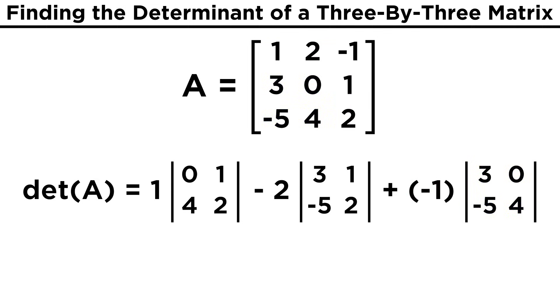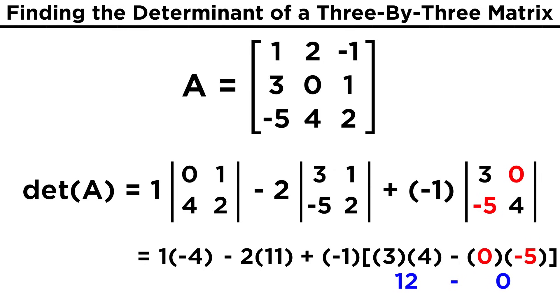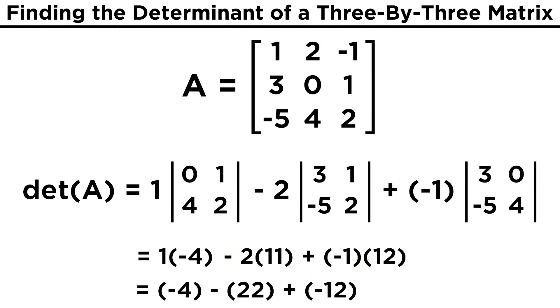Now we just have three simple determinants to calculate. The first is zero times two, minus one times four, or negative four. The second is three times two, minus one times negative five, or eleven. And the third is three times four, minus zero times negative five, or twelve. We multiply each determinant by the adjacent constant, then we perform the addition and subtraction, and we should get negative thirty-eight as our answer.